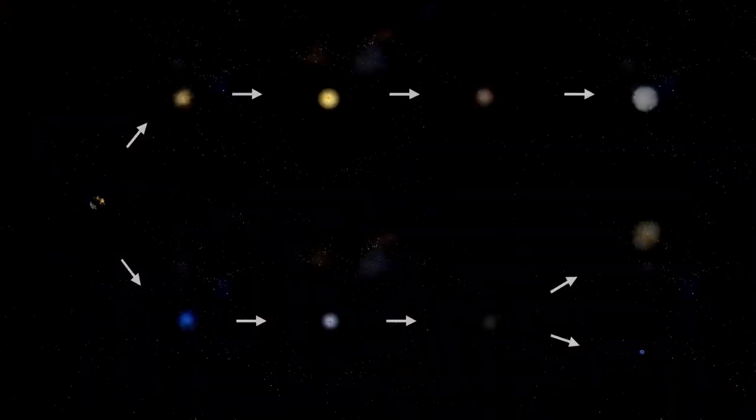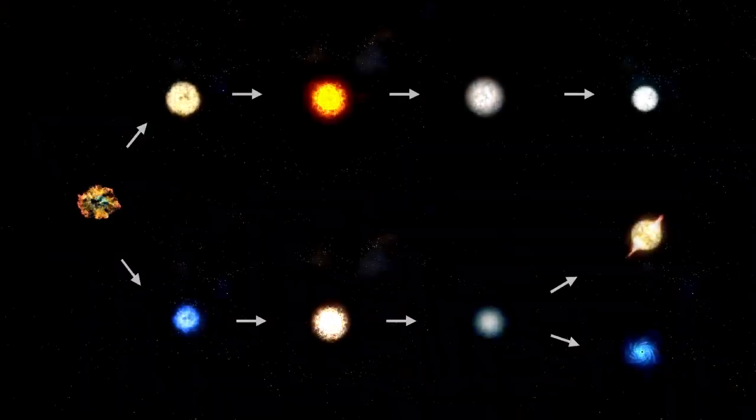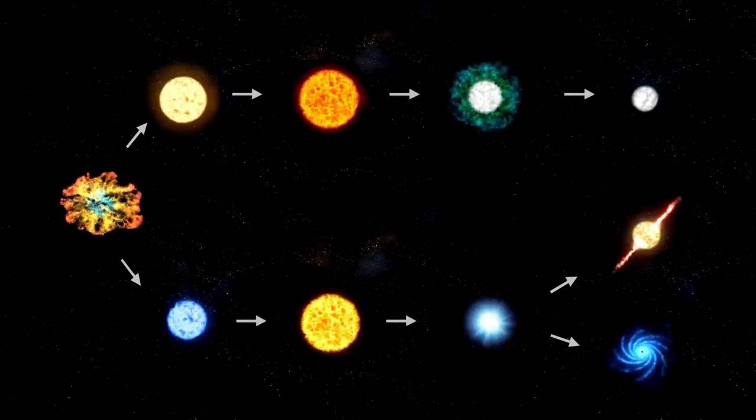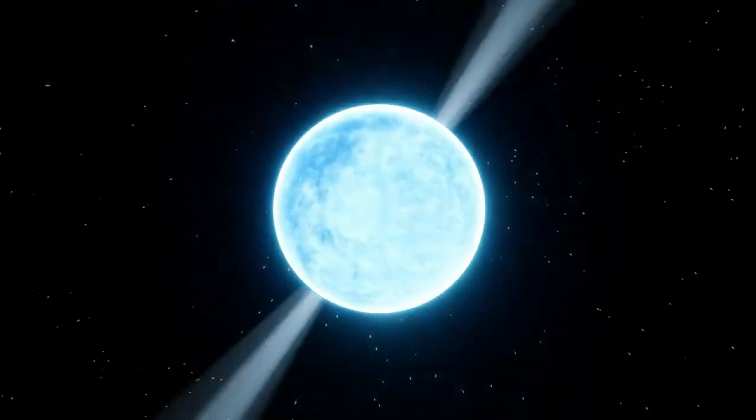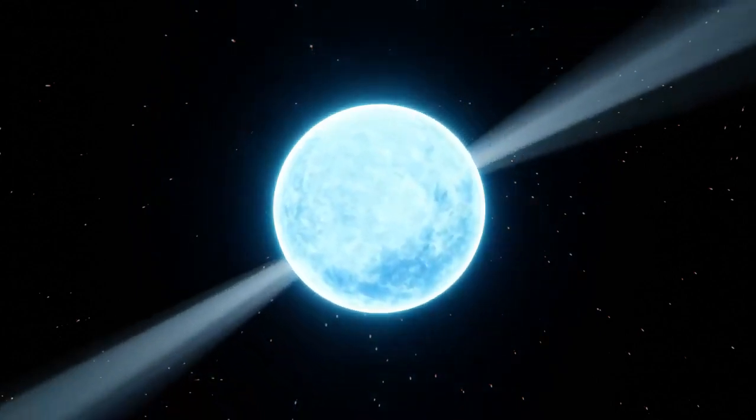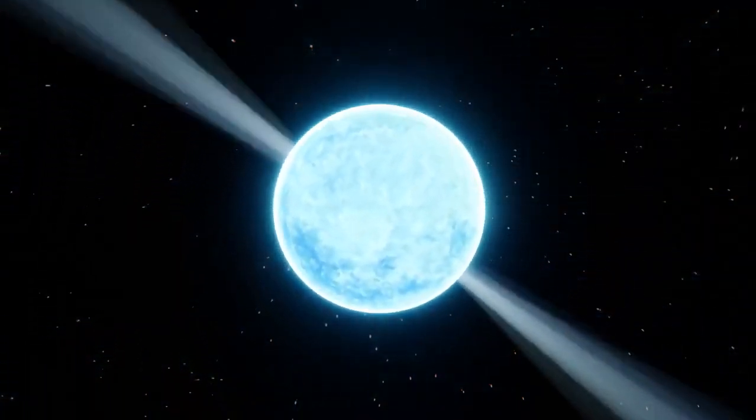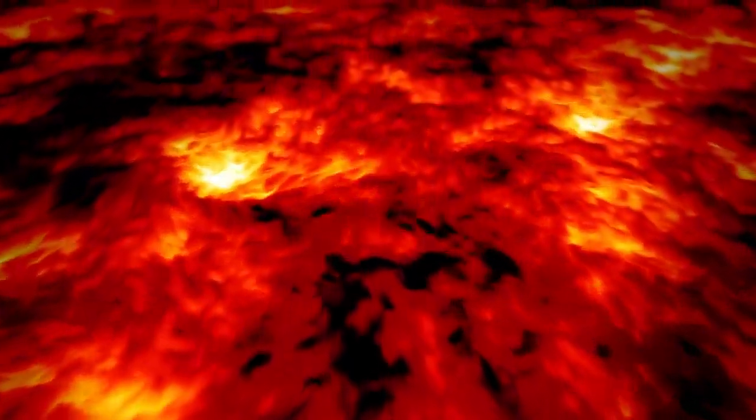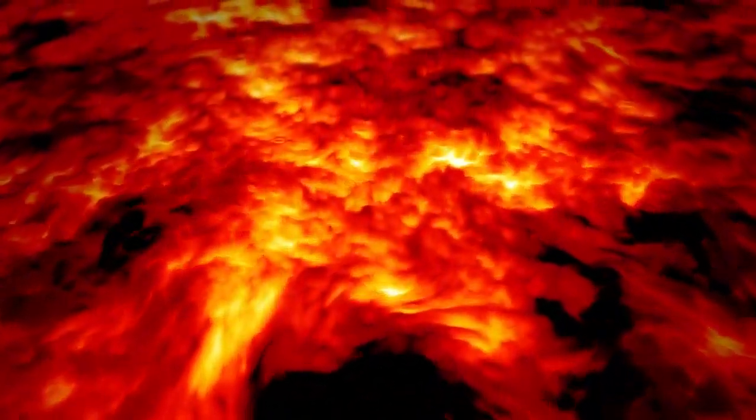One intriguing process within the star is stellar convection, where energy generated in the core rises toward the surface. This movement creates convection currents that transport energy outward, balancing the star's internal processes with its external luminosity. These currents also cause variations in brightness, manifesting as the pulsations observed from Earth.